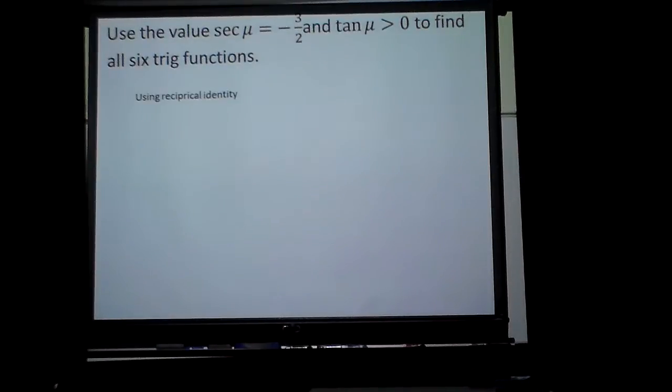First, we're going to use the reciprocal identity. Cosine equals 1 over secant. So secant is negative 3 halves, so I have 1 over negative 3 halves. And how do you do that? Upside down you're turning me, giving love instinctively. Little Diana Ross, you multiply by the reciprocal, which would give me negative 2 thirds.